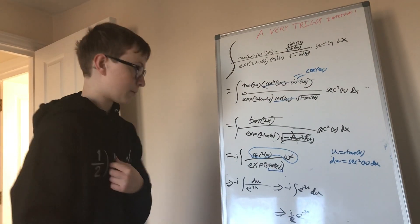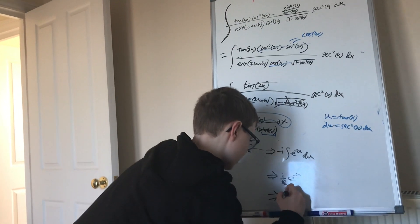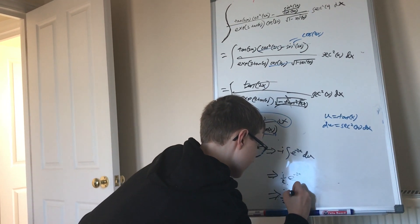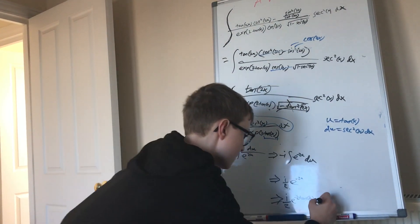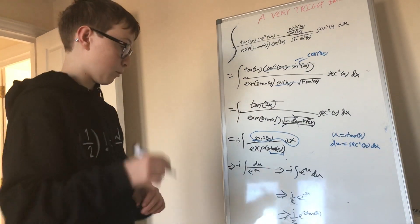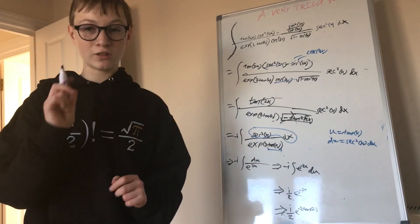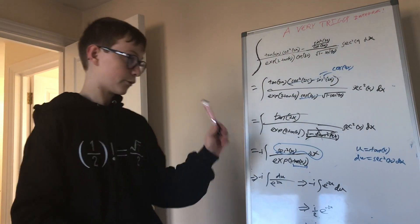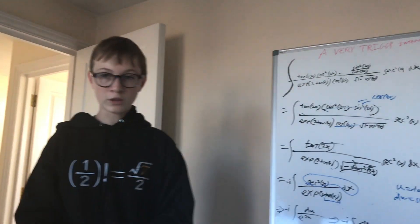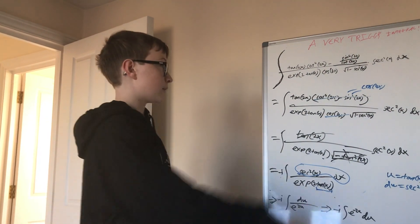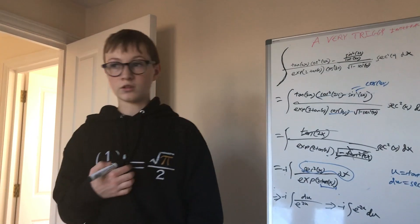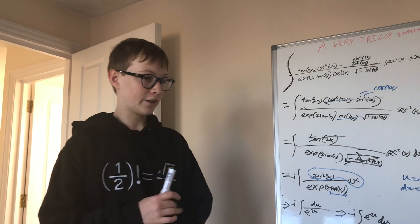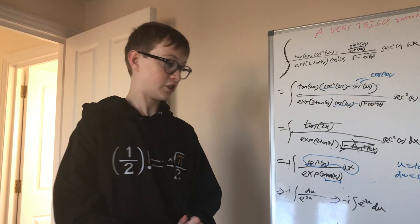The last step is substituting back u = tan(x), leaving us with i over 2 times e to the negative 2 tangent x, minus C — because it's Christmas and we're rebellious doing maths for fun. Please don't do this on your exam though. As you can see, this is a very tricky integral and was very fun to do. Shout out to Flammable Maths — he's the one who first did this integral. This has been Gregorius Maths. Merry Christmas, and I'll see you in the next video where I'm going to do topology. Goodbye.